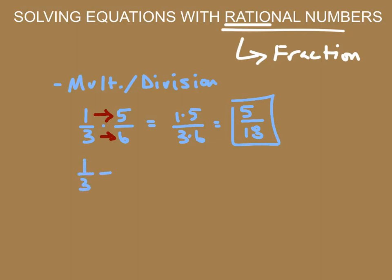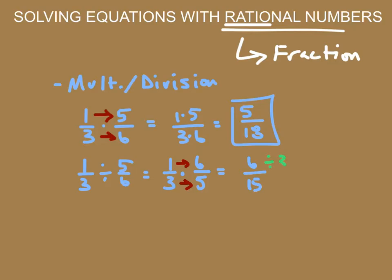Now if I were to take one-third and divide it by five-sixths, what I want to do is keep my original fraction and multiply by the reciprocal, which is six-fifths. So I'm rewriting this: keep my number the same, change my sign from division to multiplication, and then flip my fraction. So one times six gives us six, and three times five gives us fifteen. Each of these numbers are divisible by three, so I can simplify this down to two-fifths.